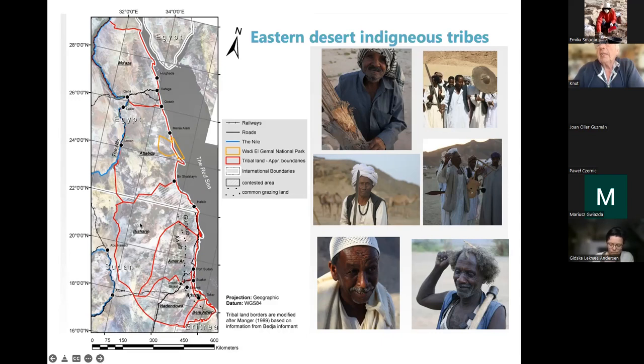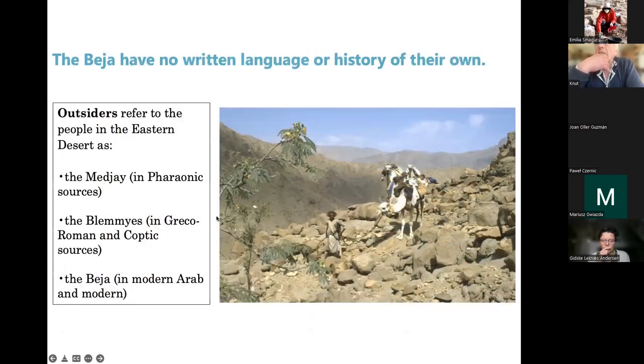It's very typical that what has been published about indigenous tombs are found on the border of the land, along the Nile and along the coast, and very little has been done in the desert itself, which is the homeland of these tribes. The Bedjahs do not have written history, and we have to rely on outsiders' stories about them. There we have the Medjai, which is the name they used in the Pharaonic sources, the Blemis in the Greco and Roman and Coptic sources, and then Bedjah in modern Arab and modern sources.